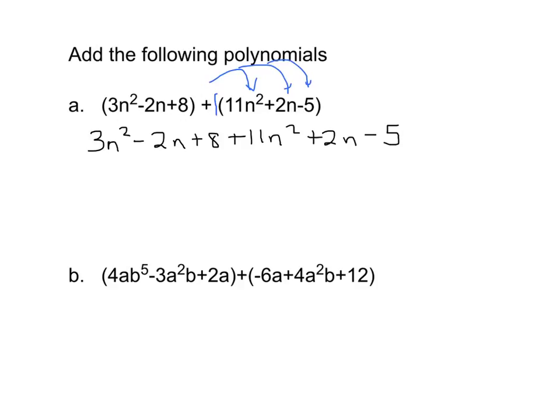And now we just combine like terms. So the first thing I look for is we go in descending order, so I start with my squared terms. 3n squared plus 11n squared is going to give us a 14n squared.